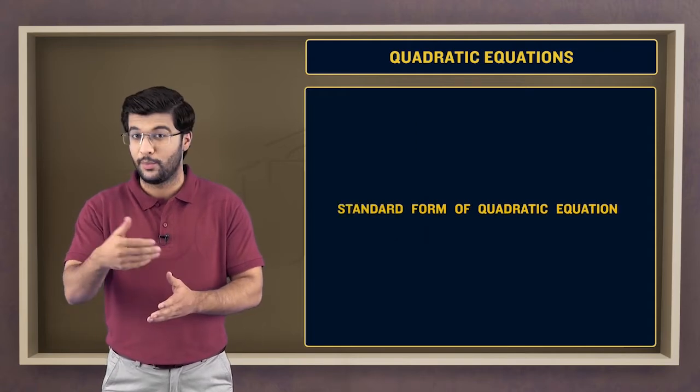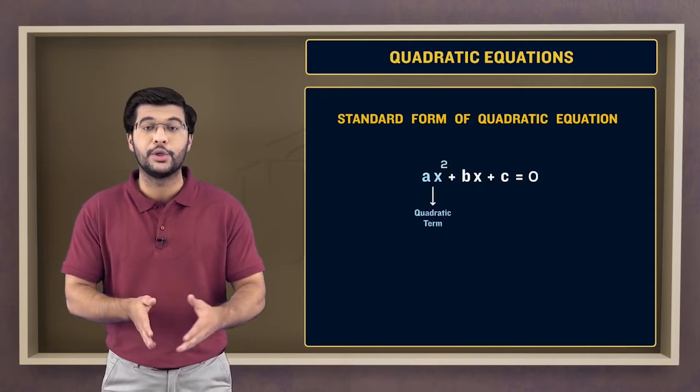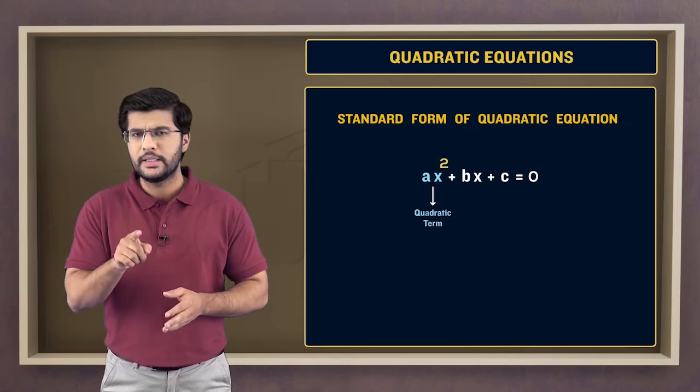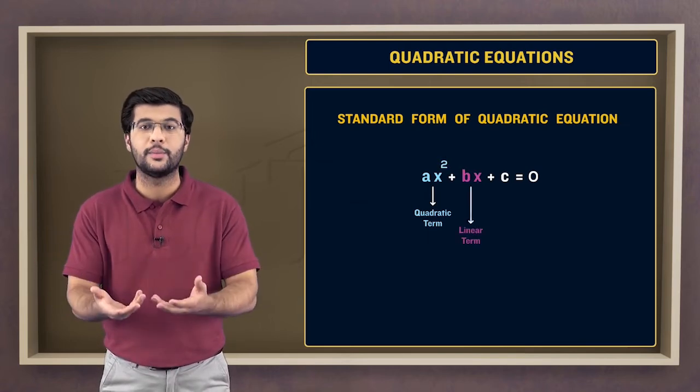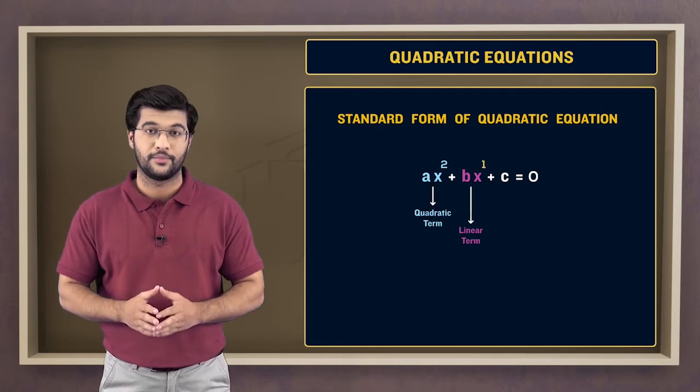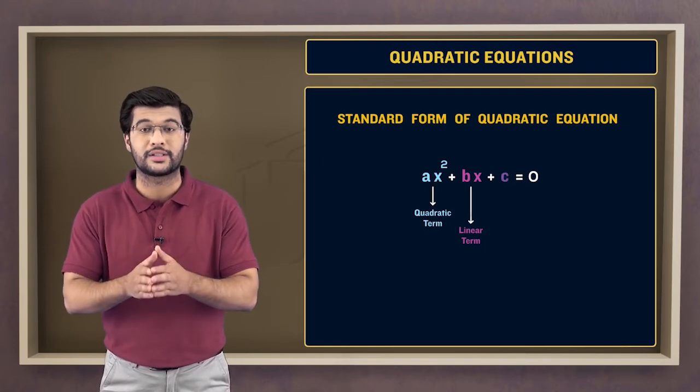How about a couple more? The first term is called the quadratic term due to the square. This second term is called the linear term, linear because the variable x has power 1. And the third term having no variable is called a constant term.